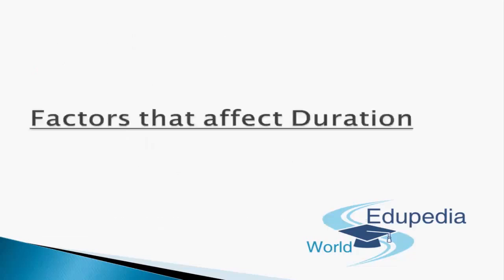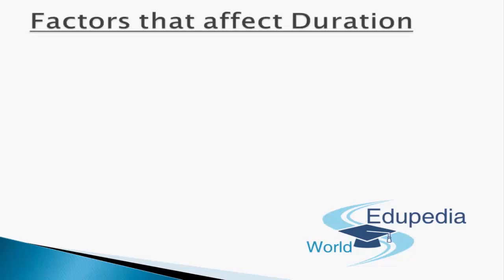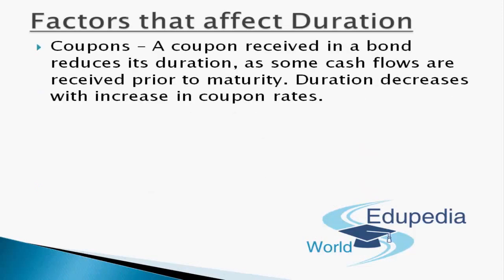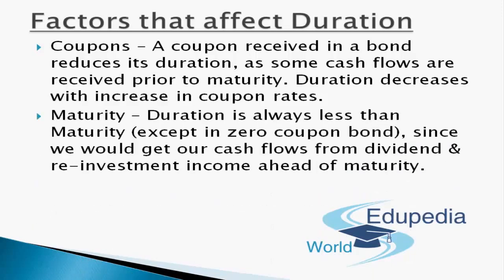Now let's discuss the factors that affect duration. The first and most important factor is coupons. A coupon received reduces duration because some cash flows are received prior to maturity. Duration decreases with increase in coupon rates, as higher cash flows are received comparatively earlier and reinvestment income also increases.